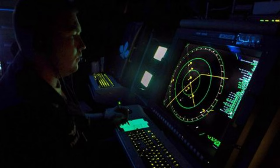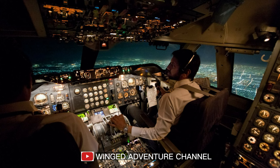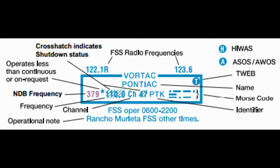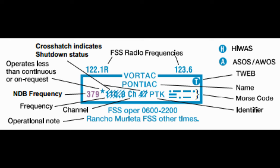AM doesn't suffer from the capture effect found in FM. The capture effect is the complete suppression of the weaker signal. When an FM radio receives signals that are nearly equal in strength or are fading independently, the receiver may switch from one to the other — meaning a nearby aircraft could inadvertently override an ATC transmission.